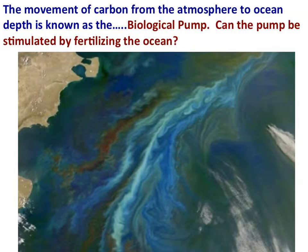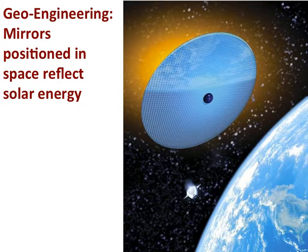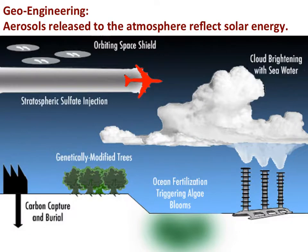Can geoengineering stimulate blooms of phytoplankton to remove carbon dioxide from the atmosphere? Other geoengineering projects to mitigate climate change could include positioning mirrors in space to reflect solar energy, or spraying aerosols into the atmosphere to reflect solar energy. Is this a temporary fix? What are the implications? What if it doesn't work? What other problems will arise that we did not anticipate?